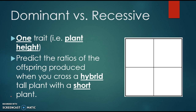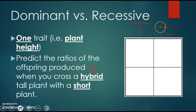The problem we're looking at here, we want to predict the ratios of offspring if you cross a hybrid tall plant with a short plant. Hybrid also means heterozygous, and that individual will have a dominant and a recessive allele. You put that individual's genotype across the top of your Punnett square.